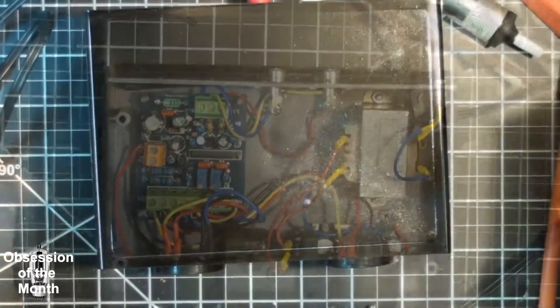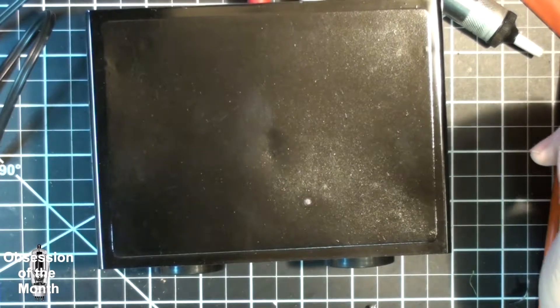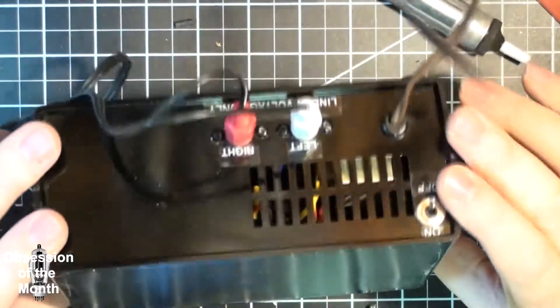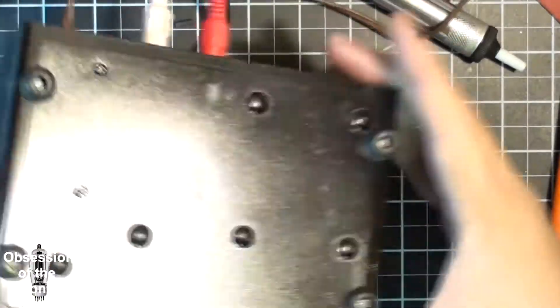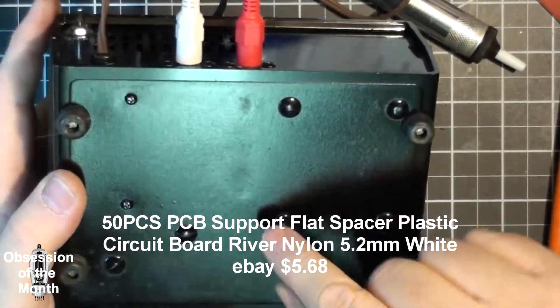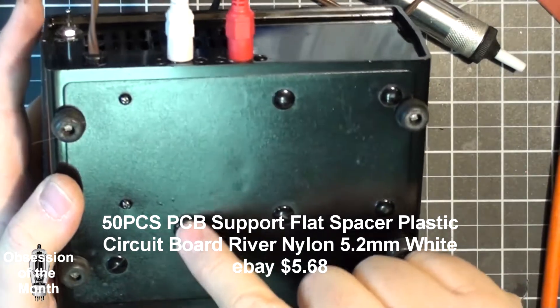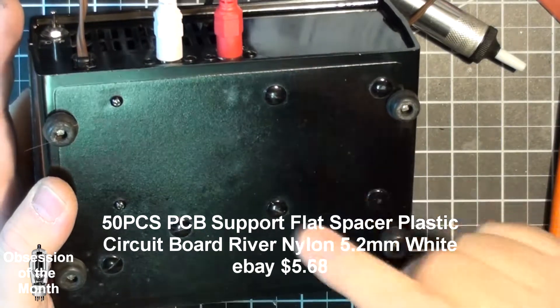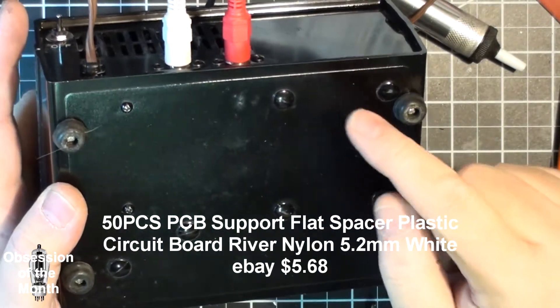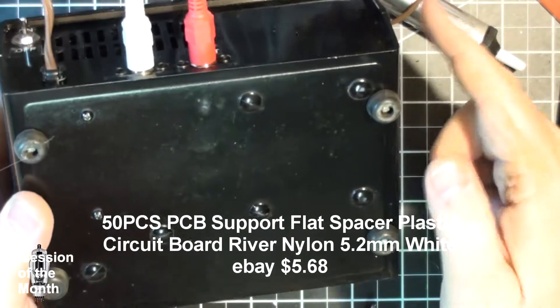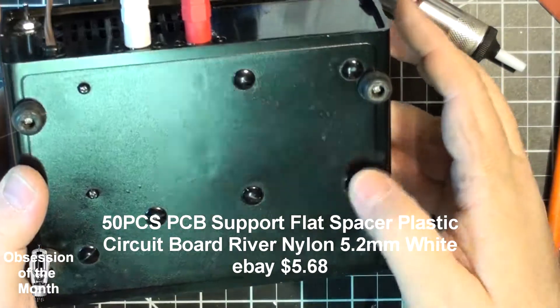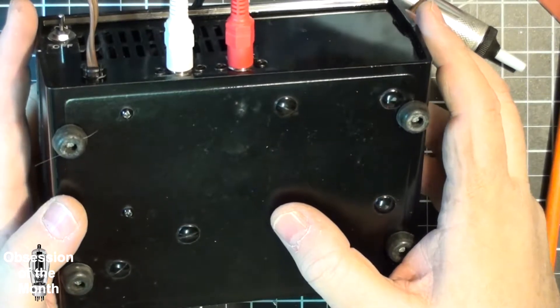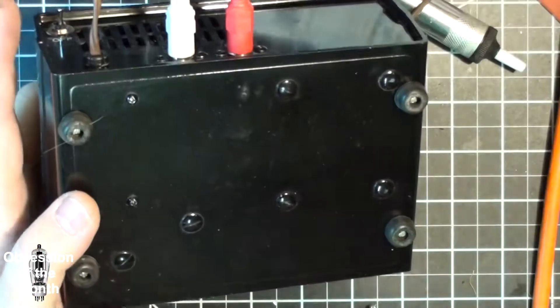Okay so here it is back together. Oh one other thing, I found these really nifty PCB board supports that you basically drill a five millimeter hole through something and you just push them through. They work really well, I didn't have to mess with nuts and bolts or screws or anything. The only screws I used were the ones that actually hold the transformer in place.